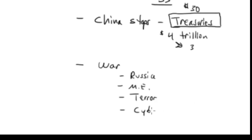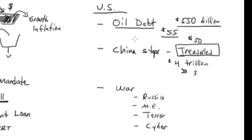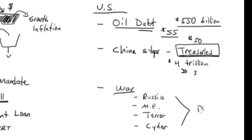It also could be cyber. Look at these three situations: oil debt, China stops buying Treasuries — which is debt — and then war. I showed you how critical war is historically, tied to the money families. War is always paid for out of debt. This theme just keeps coming over and over: debt, debt, debt.